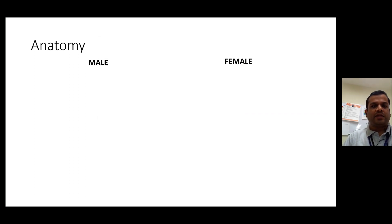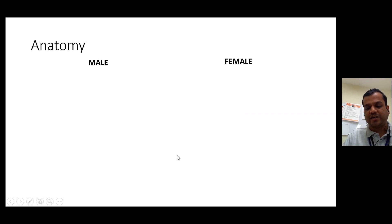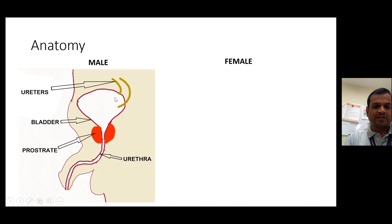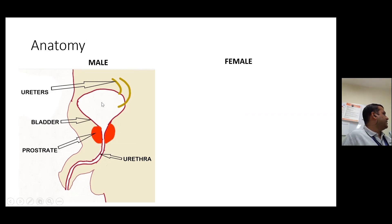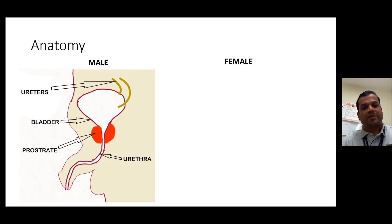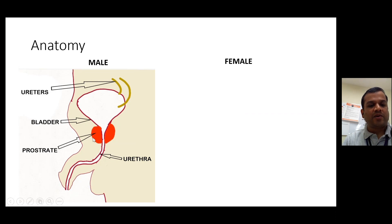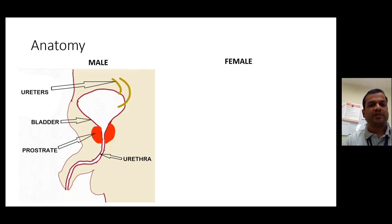Even though this system exists in both men and women, there are major differences in how they pass urine based on external genitalia. In males, there's the bladder, then the urethra through which urine is expelled out of the body. An important organ to bear in mind for men is the prostate — I'll explain why it's important for urinary tract infection in males.